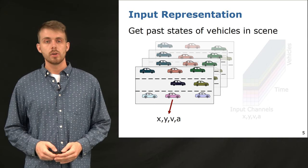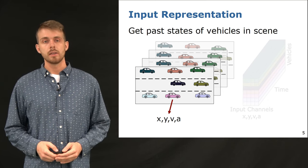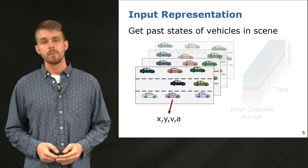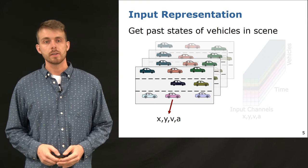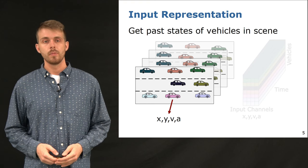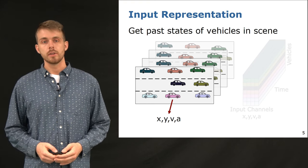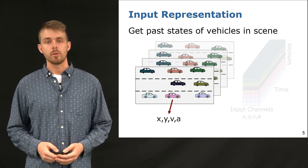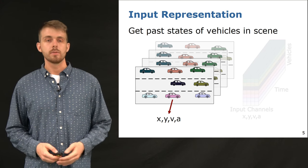For the proposed input representation, we first acquire the past states for all cars in the scene. The states can for example be X and Y position, velocity and acceleration. Each image on the left represents a snapshot of the local neighborhood around the target car in black at a specific time step.